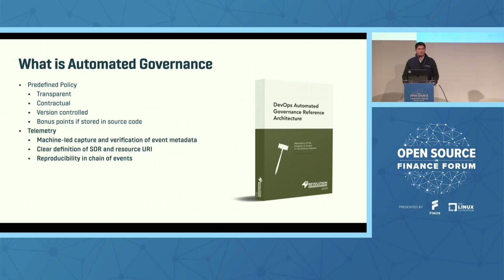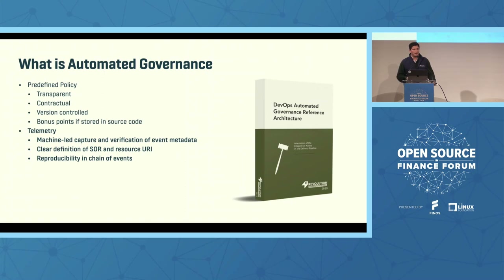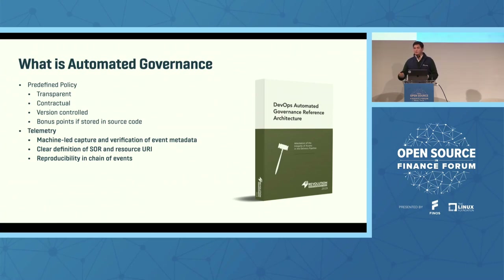The second piece is telemetry — the machine-led capture of all the event metadata around your SDLC, meaning there's no human reporting. You have software that's able to capture and independently verify the authenticity of events happening. The definition of an event not occurring is that the machine couldn't capture it. Also important is having clear definitions of the system of record and resource URIs, and the ability to reproduce that chain of events at any given time to show the results.